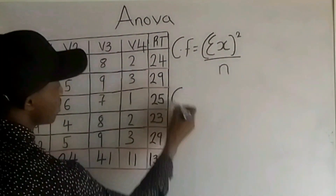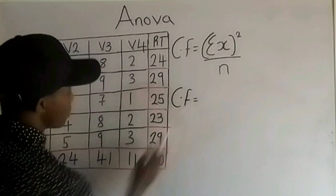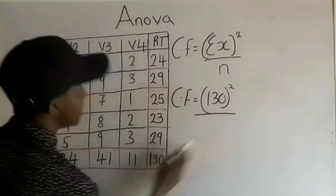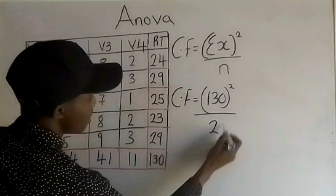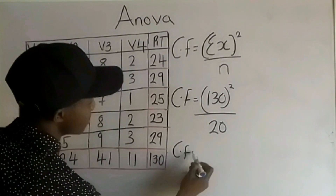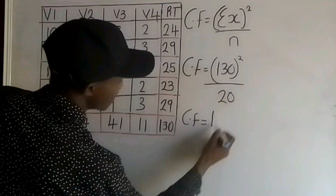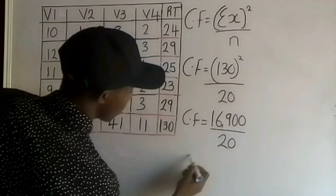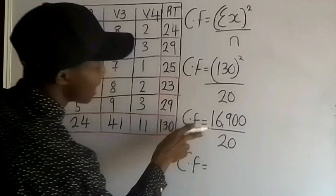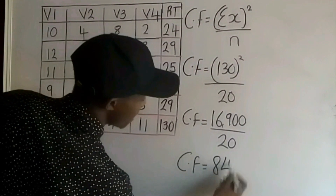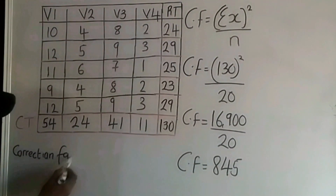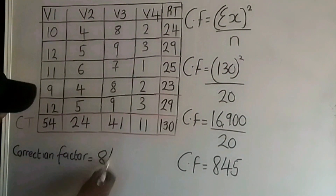The correction factor is calculated by substituting: Σx is 130, so 130 squared is 16,900, all over 20. Therefore, the correction factor is 16,900 divided by 20, which equals 845.